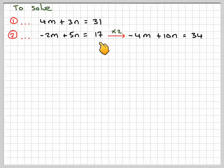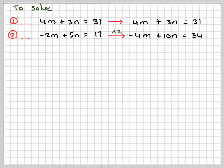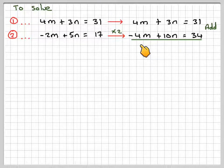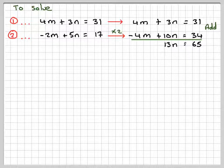The top one we'll keep the same. And then we'll add these two equations. So 4M minus 4M gives you nothing. 3N plus 10N gives you 13N. 31 plus 34 gives me 65. And therefore, N equals 5.